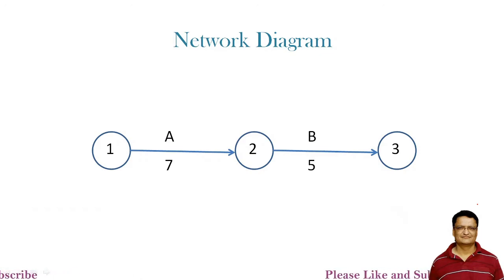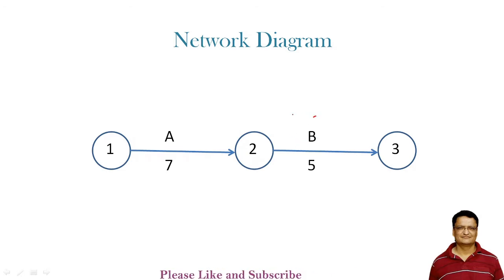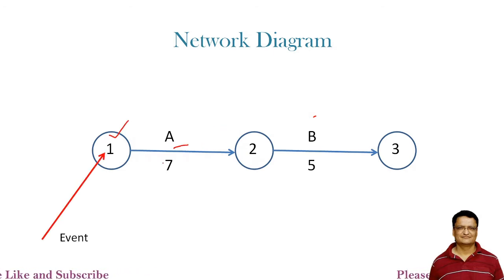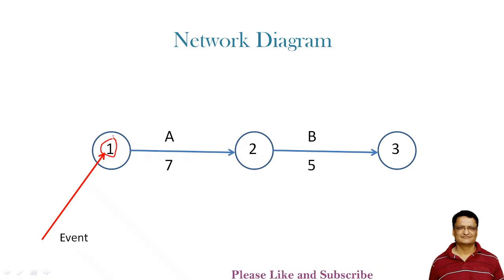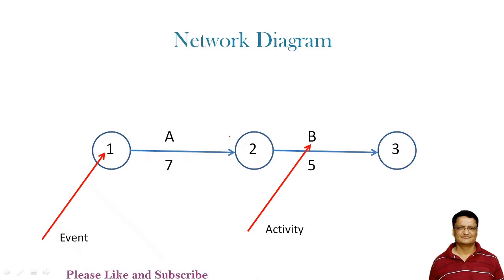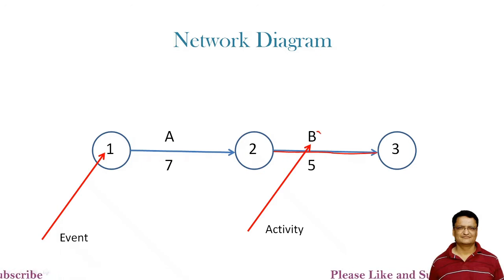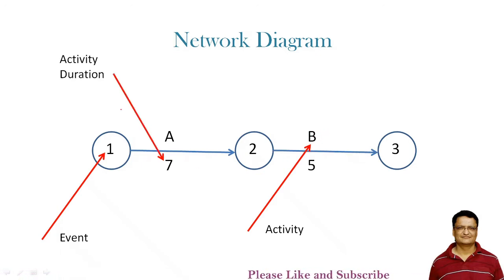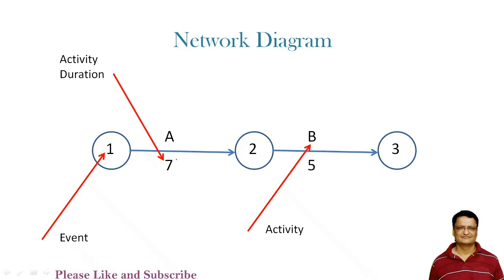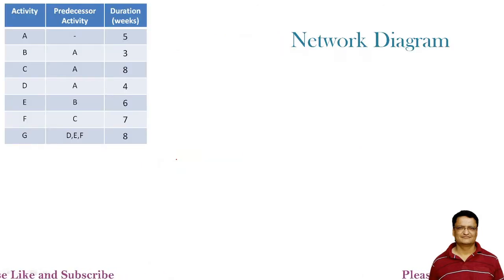Before we begin the PERT analysis, we need to understand how the network diagram is constructed. A network diagram consists of events and activities. An event is represented with a number inside a circle — the starting event is represented by number 1. An activity is represented by an arrow, with the activity name and duration shown below it. We will now construct the network diagram for the given problem.